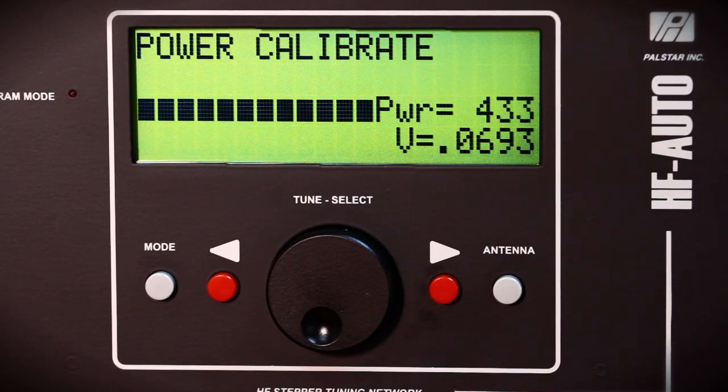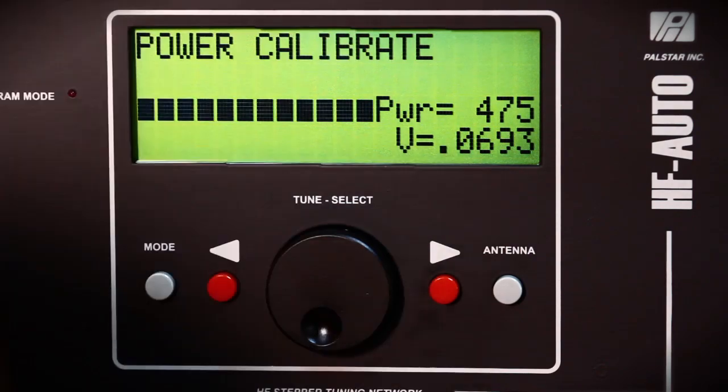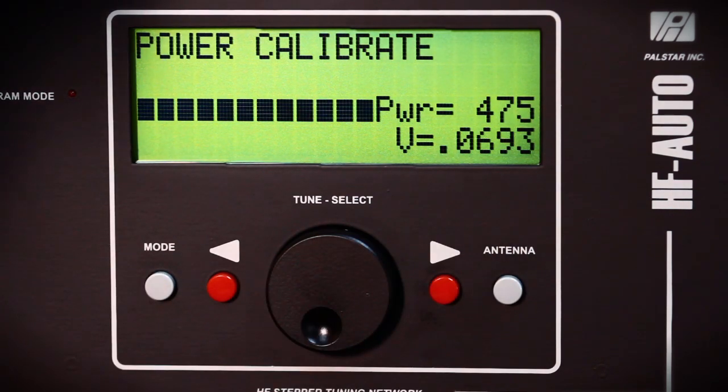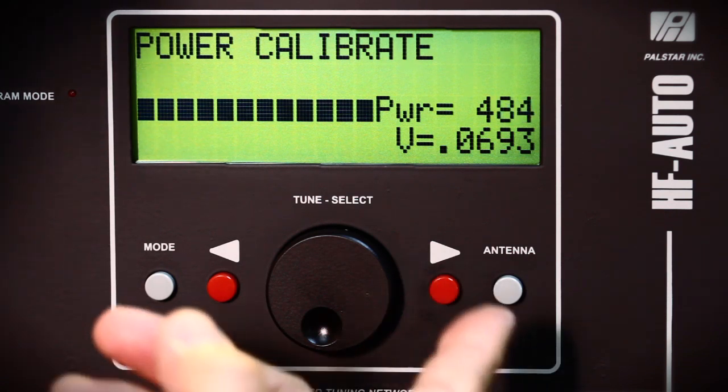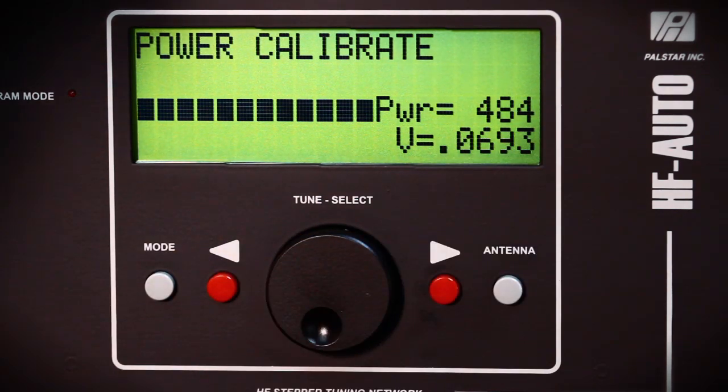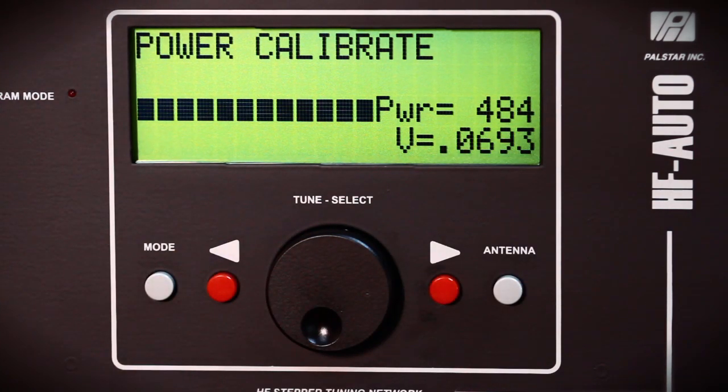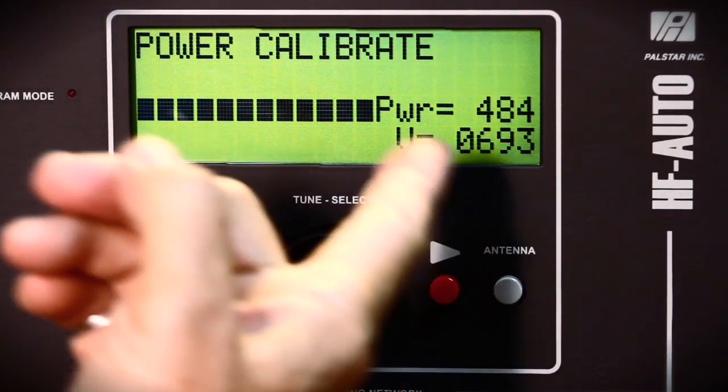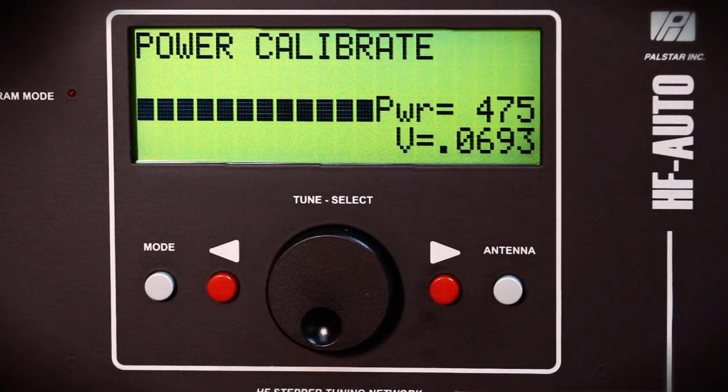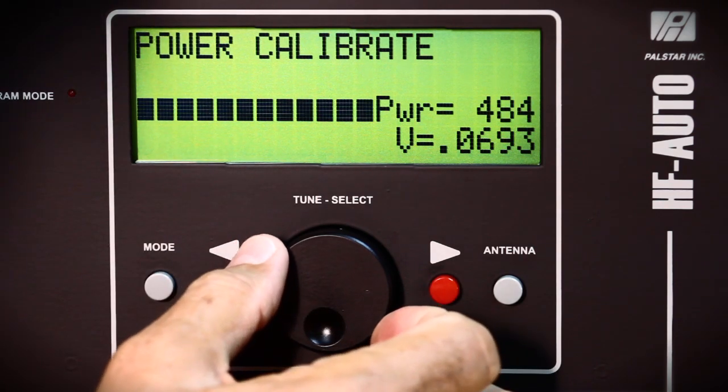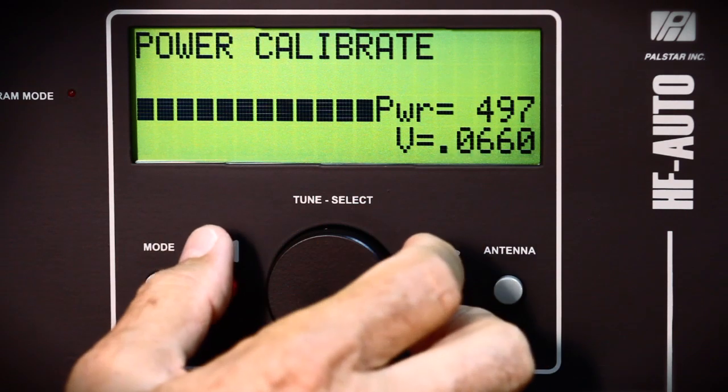And we'll adjust this for 500 watts as closely as I can get it. Okay, there's 500 watts, 502. You can see it's reading 484, 475. It's jumping around a little bit, but it's around 484. So in order to make this look like the array solutions reading, which is 500, you turn the knob to the left until it reads 502.